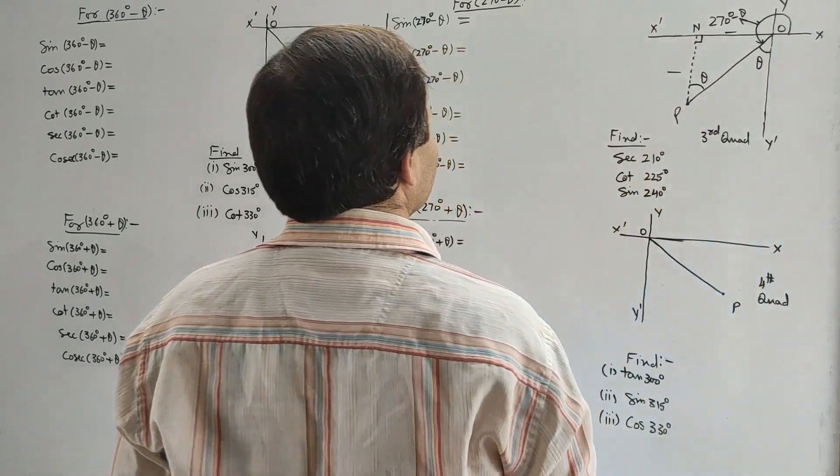In general, wherever there is an odd integral multiple of π/2 plus or minus θ, perpendicular and base will interchange, so sin changes to cos, cos to sin, tan to cot, sec to cosec, and vice versa. But for 2nπ plus or minus θ, we come back to the same position — equivalent to θ — so there is no interchange of perpendicular and base. Therefore sin remains sin, cos remains cos, tan remains tan, and so on.